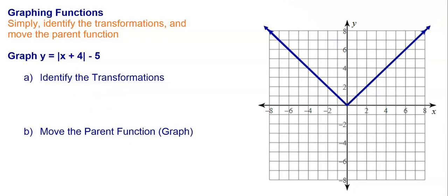I have the absolute value of x plus 4 minus 5. You just start off by identifying the transformations. I have a plus 4 on the inside, so that's going to be a left 4, because on the inside it's the opposite of what you think. And then I have a minus 5 on the outside, so that's going to be down 5.